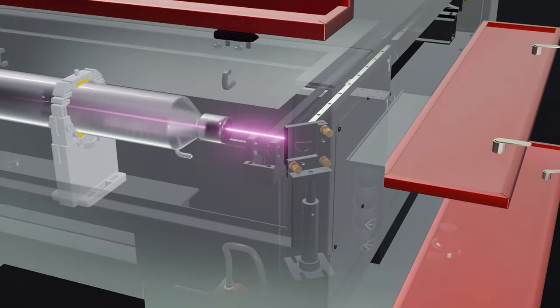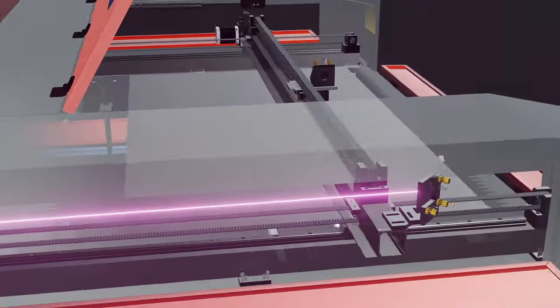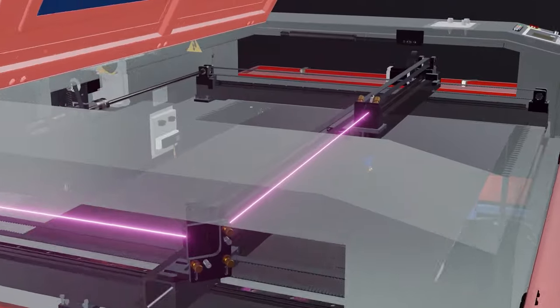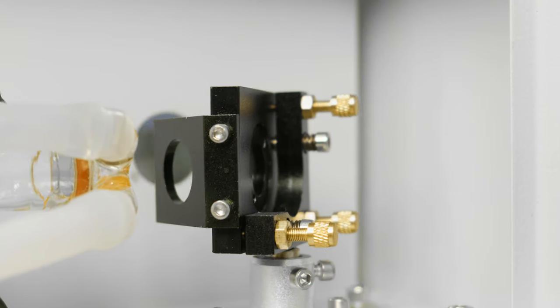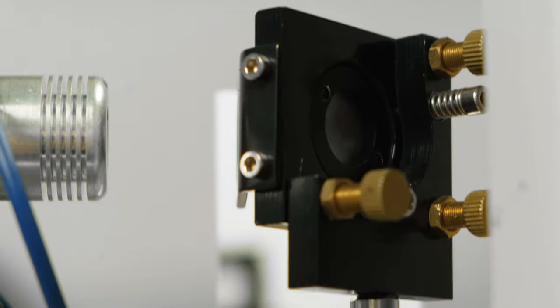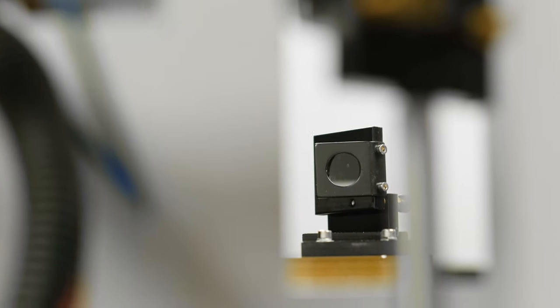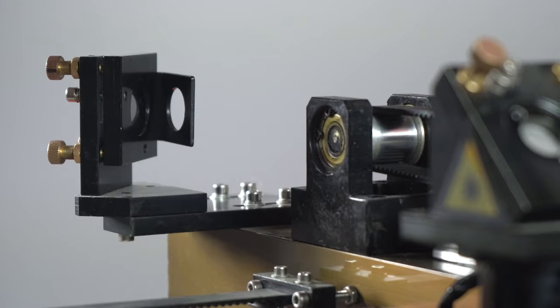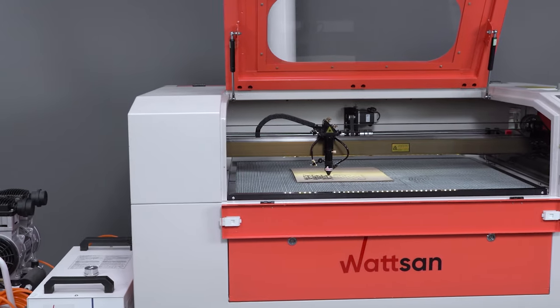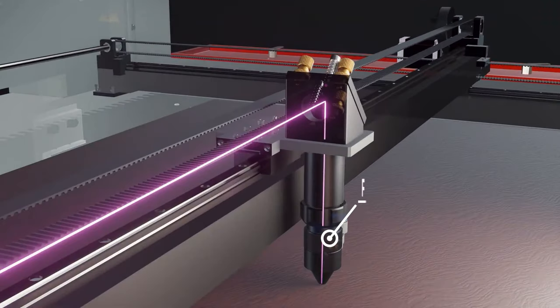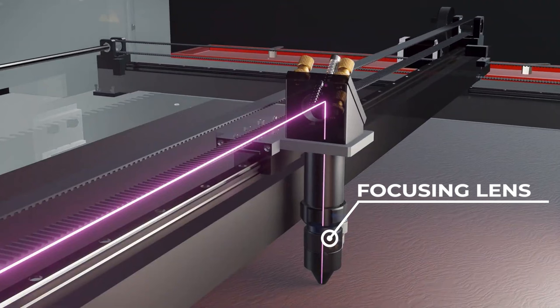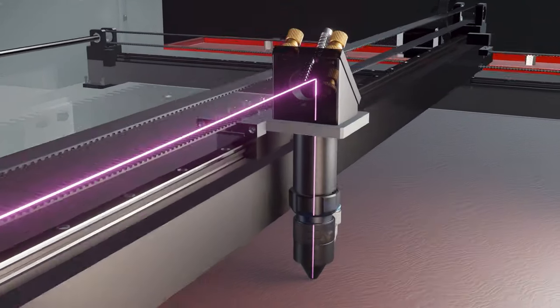The laser beam exits the tube and is reflected by a system of moving mirrors that are mounted on the machine. Normally, there are three of them. The first mirror is stationary and is mounted vertically next to the transmitter. The other two are mounted on the moving parts of the machine, both vertically and horizontally, so they can move to any set point. The final reflected section of the beam passes through the focusing lens, which is also located on the laser head, and then reaches the material.